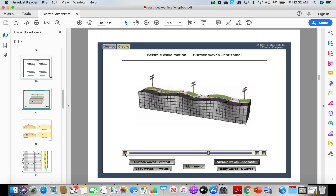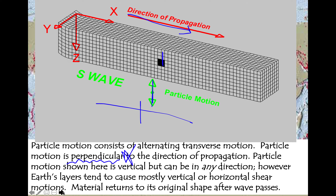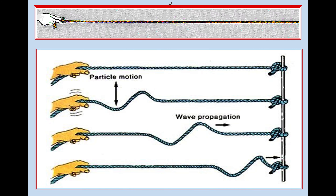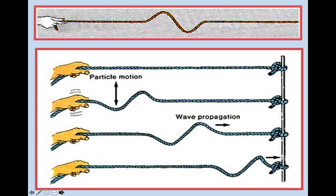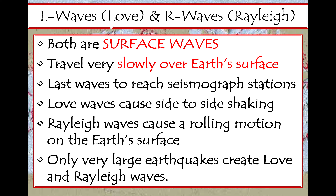Love waves and Rayleigh waves are both surface waves. They travel very slowly over the earth's surface. They are the absolute last waves to reach seismograph stations because they're so slow and they don't travel as the bird flies — they don't go through the earth. They go all the way around the edge of the earth, so it takes them a long time to get there.